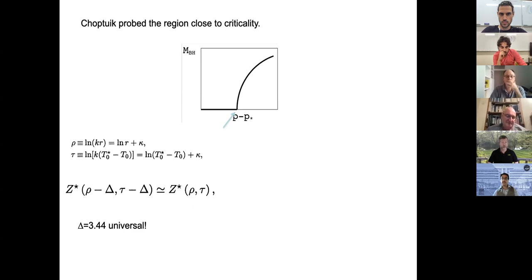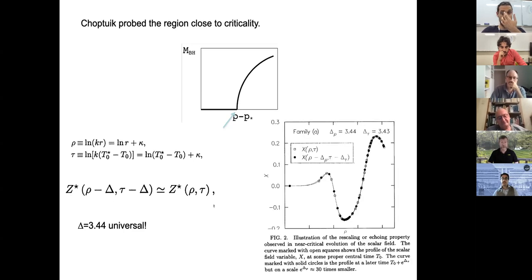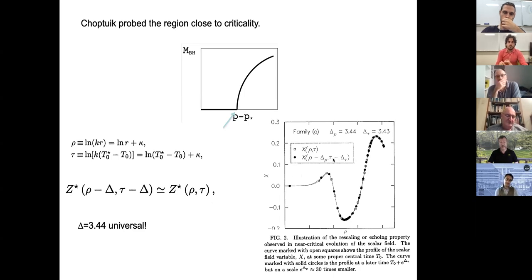This period he found was also universal. Here is another plot from Choptuik's paper where he takes a scalar field function — I believe this is a spatial derivative — and plots it at two different instances of space and time, superposed. As you can see, it's the same curve.